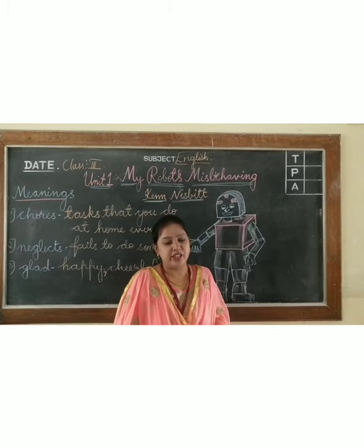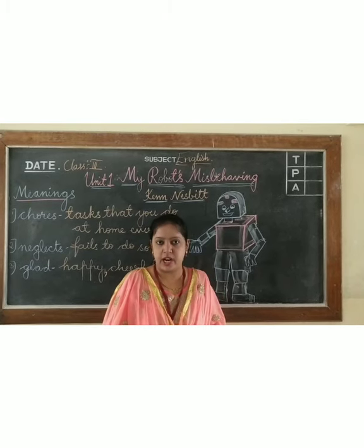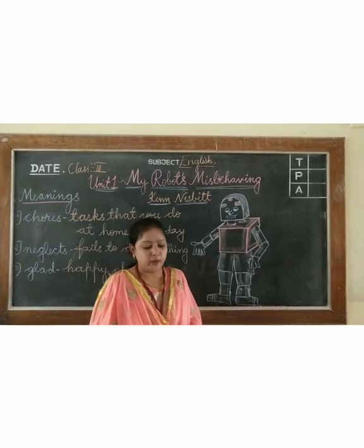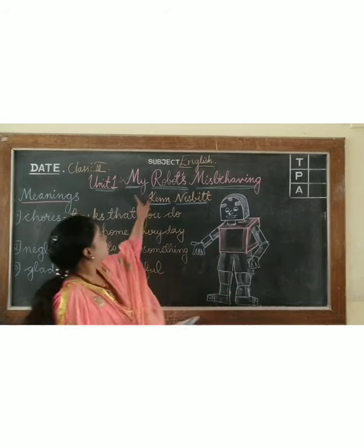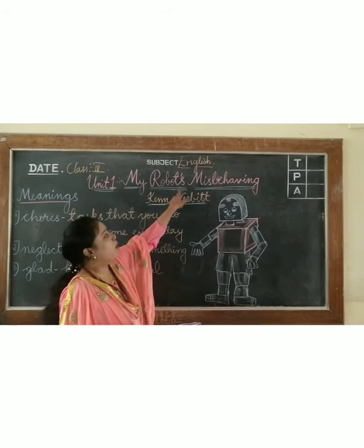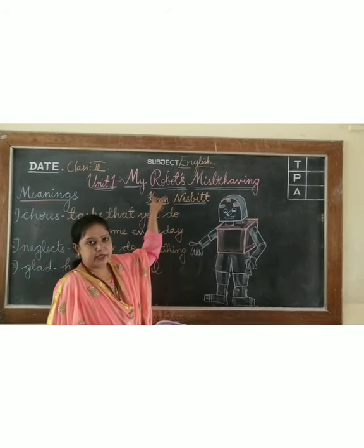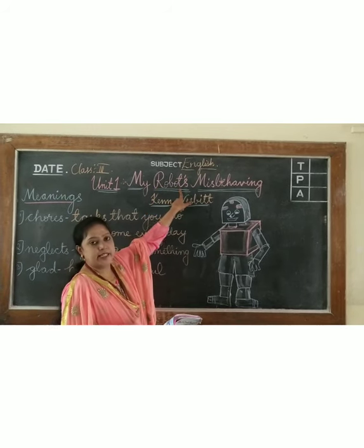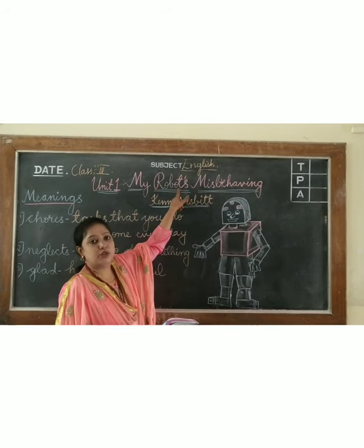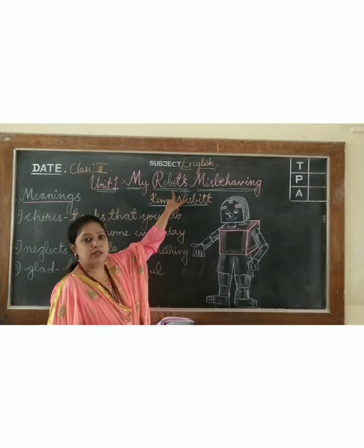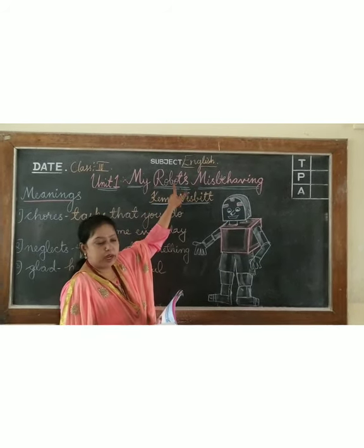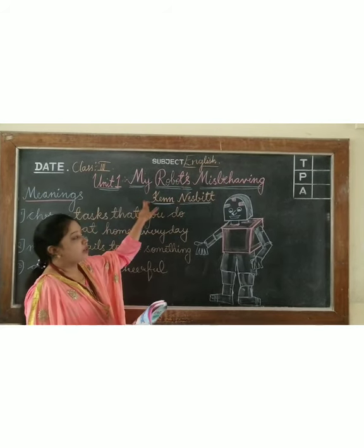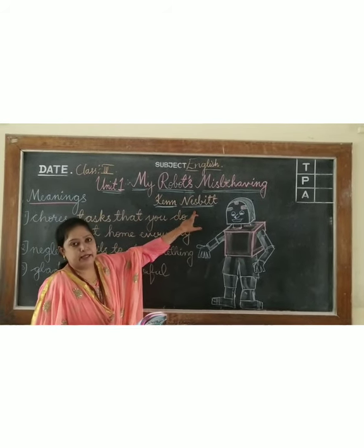Open your English textbook, Sunshine Reader, page number 6, Unit 1 — "My Robot is Misbehaving." It is a poem. Children, here the T is silent, so you should pronounce it "Robot." This poem is written by Ken Nesbitt.